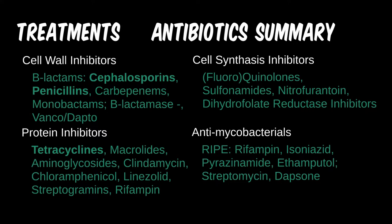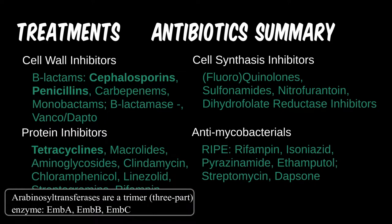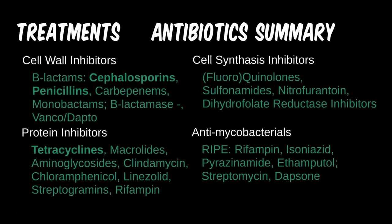Lastly in the RIPE mnemonic is ethambutol. This anti-mycobacterial also acts on a group of enzymes used for cell wall synthesis — the arabinosyl transferases — inhibiting them and preventing further production of cell wall material altogether. The specific details here are fairly uncommon for medical students.